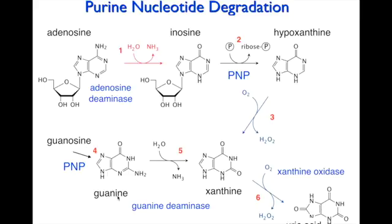On the other side, guanosine has its ribose removed to form guanine, which is deaminated by guanine deaminase to produce xanthine, also channeled into the production of uric acid. So we have two channels forming the one product, uric acid — which is why it can build up if there are excess purine nucleotides. The question is how to treat this and stop it crystallizing and causing problems.